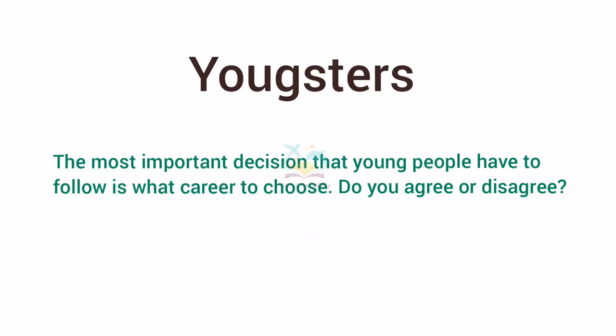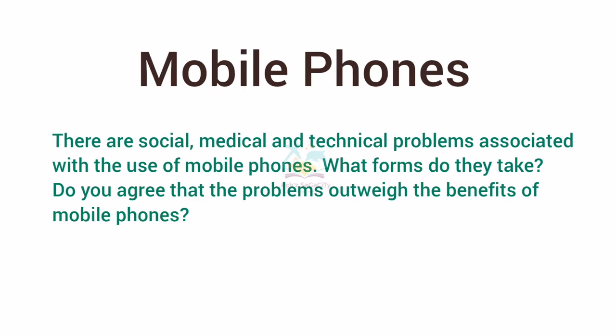The first topic is youngsters. The question is: 'The most important decision that young people have to make is what career to choose. Do you agree or disagree?' You can either agree or disagree. If you think youngsters need to take many other decisions — such as those related to a life partner — you can disagree and try to give valid reasons with explanation and examples.